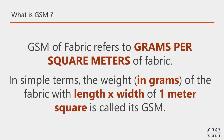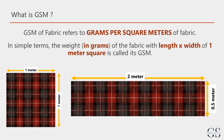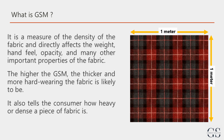GSM, or grams per square meter, is a crucial metric in the textile industry. It represents the weight of a fabric in grams per one square meter. This single value can tell us a lot about the fabric, influencing its weight, hand feel, opacity, and other essential properties.